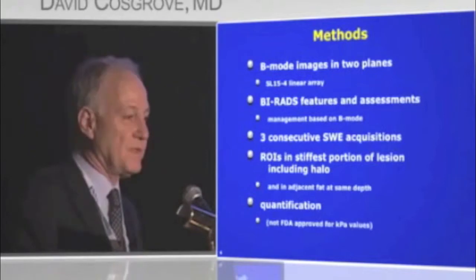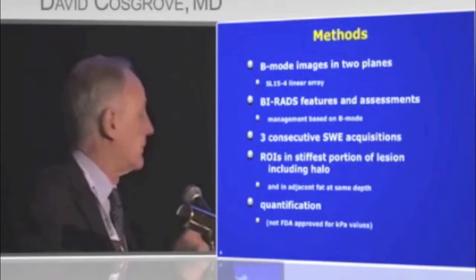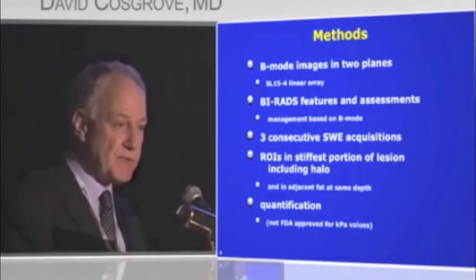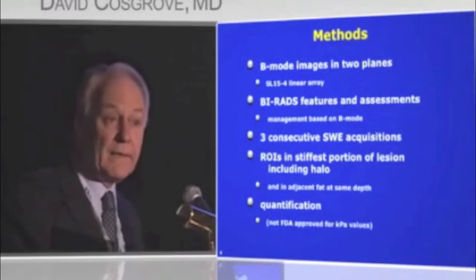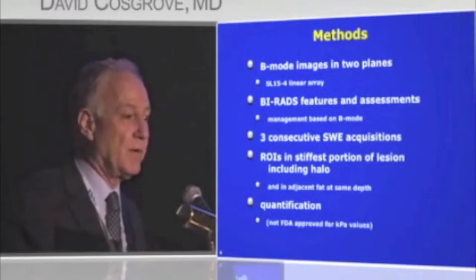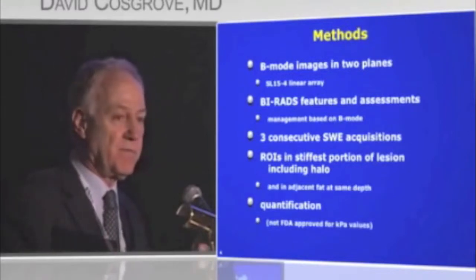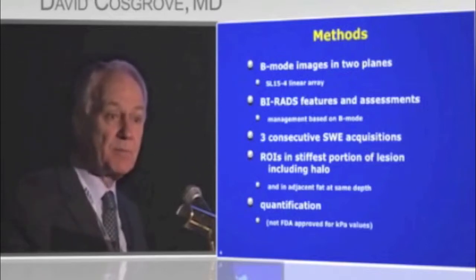Using the system to measure stiffness values in kilopascals, we placed ROIs—a small two-millimeter-squared box—on the stiffest part of each lesion, identified by eye using the color bar. The values are the peak values available for that lesion. Interestingly, they very often lay outside the visible B-mode lesion, particularly for malignancies.